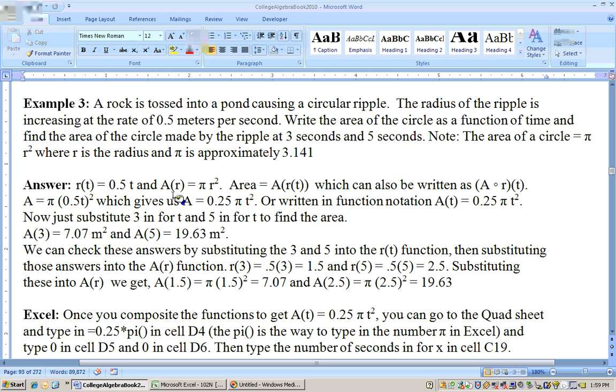The area of a circle is A(r) equals pi r squared. If r equals 0.5t and A equals pi r squared, just substitute the 0.5t in there for r, and we're compositing the functions together. That's A(r(t)) equals pi times 0.5t, and that would get squared, 0.5t squared. We could square this, that would be pi times 0.25t squared, or 0.25 pi t squared.